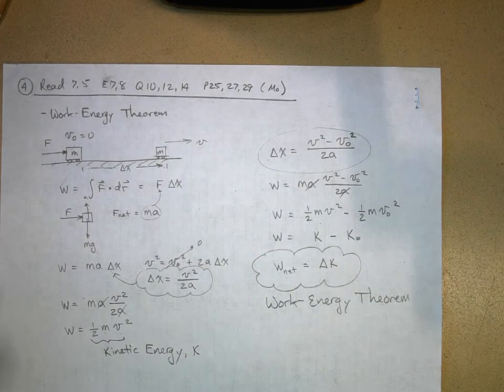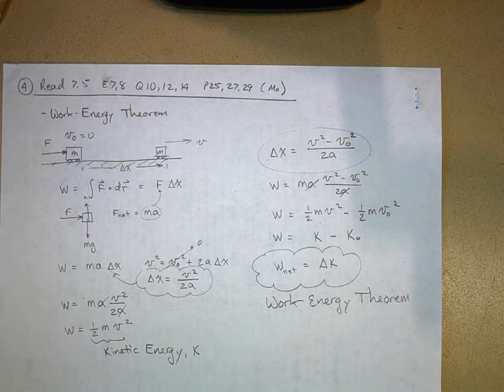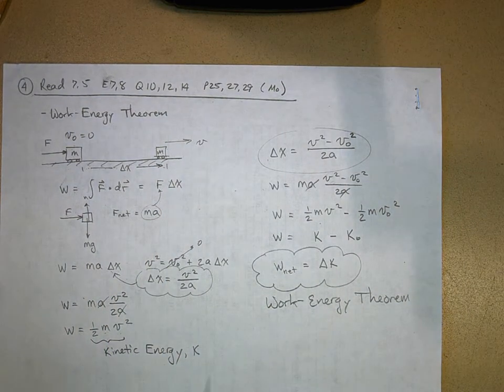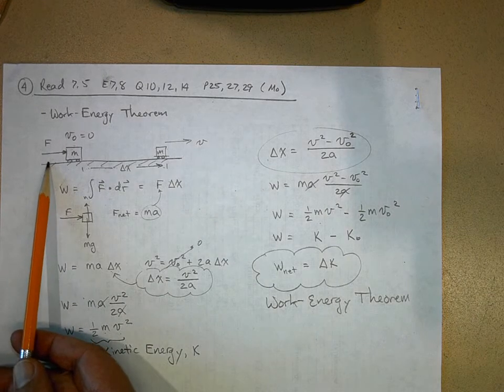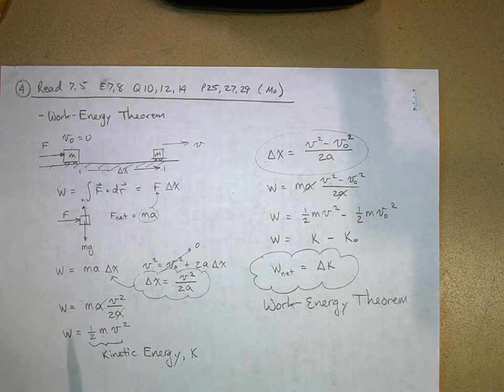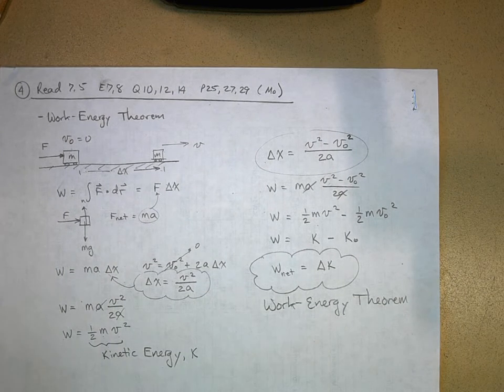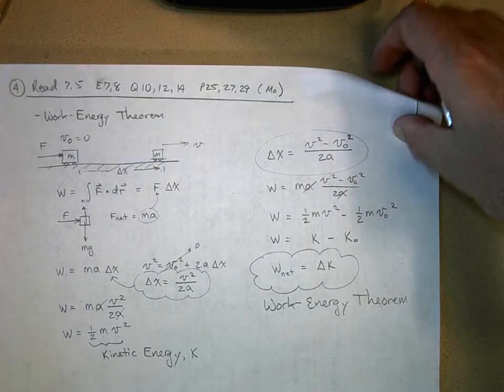I want to show you a second way of deriving this. This is kind of the regular physics way of defining the work energy theorem, but we did have some simplifying assumptions here that this force was constant and therefore I could use the kinematic equations. What if this force wasn't constant with displacement? What if this was a varying net force? It's okay, the work energy theorem still works and let me show you how that's done.